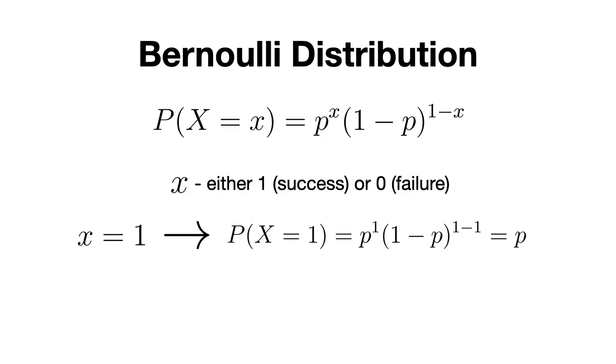If x equals 1, which means success, then we remain only with the left side of the equation, since 1-x will be 0, and 1-p raised to the power of 1-x will be equal to 1. So, P(X = 1) will equal to the probability of success, which is p.